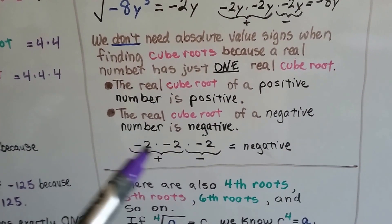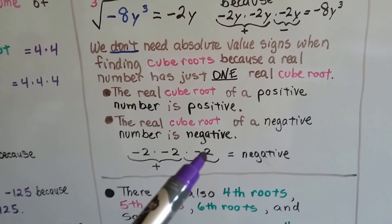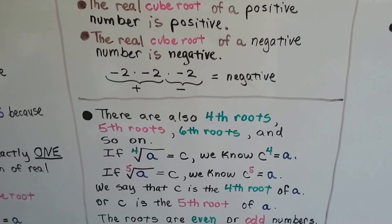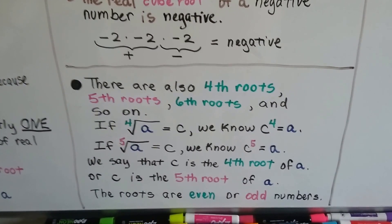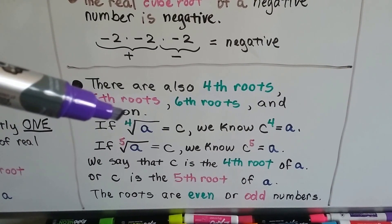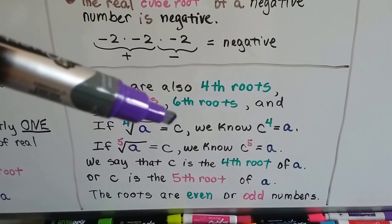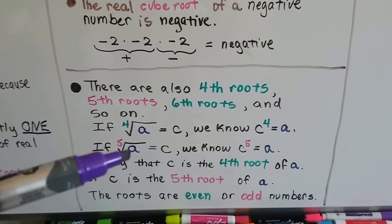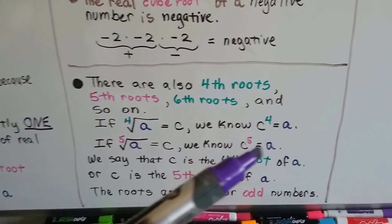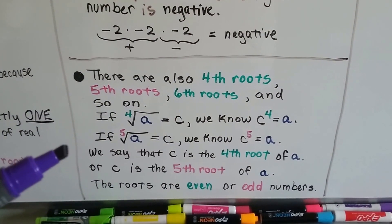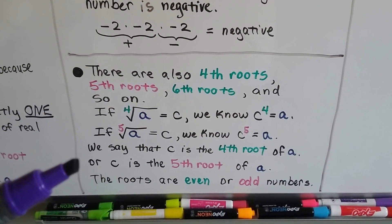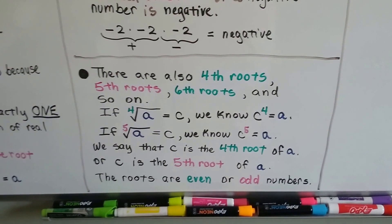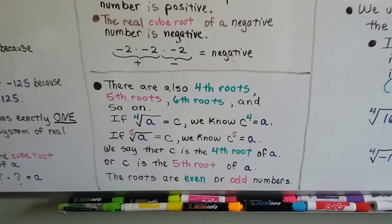You multiply the first two together and you get a positive, but when you get that third one, it's an odd amount — it puts it back to a negative. There are also fourth roots, fifth roots, sixth roots, and so on. The fourth root of a equals c means c to the fourth power equals a. If the fifth root of a equals c, then c to the fifth power equals a. We say c is the fourth root of a or c is the fifth root of a, and the roots are even or odd — four is an even number, five is an odd number, and that is going to be important.